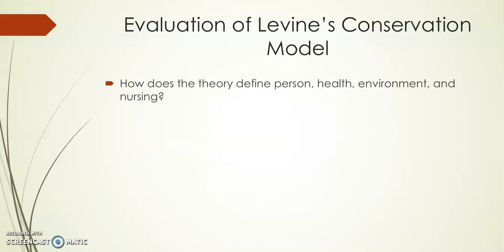Now addressing evaluation questions from the textbook: how does the theory define person, health, environment, and nursing? According to Levine, a person is a holistic being who constantly strives to preserve wholeness and integrity. Health and disease are patterns of adaptive change, and health implies unity and integrity. The goal of nursing is to promote health. The environment completes the wholeness of the individual; the individual has both an internal environment combining physiological and pathophysiological aspects, constantly challenged by the external environment, which includes factors that impinge on and challenge the individual.